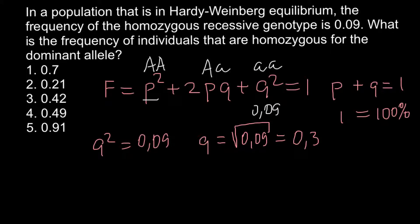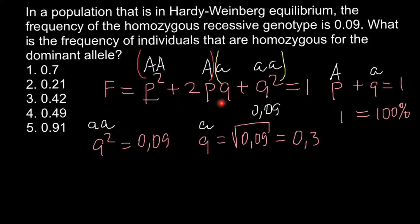Q stands for the recessive allele (small a), and Q squared stands for the frequency of the homozygous recessive. P stands for all the dominant alleles (big A) in the gene pool, and Q stands for all the recessive alleles (small a) in the gene pool. These two types of alleles make three genotypes and two phenotypes, because in simple Mendelian genetics the heterozygous genotype produces the same phenotype as the homozygous dominant.